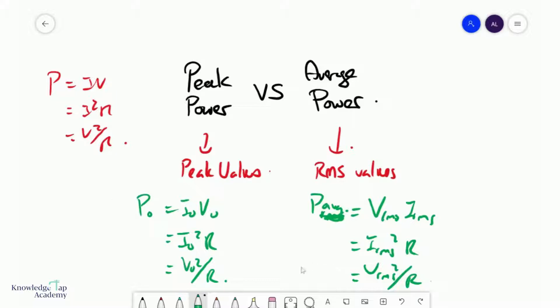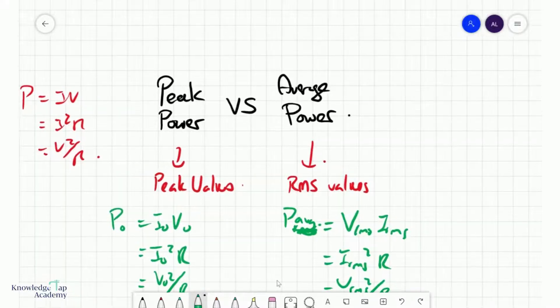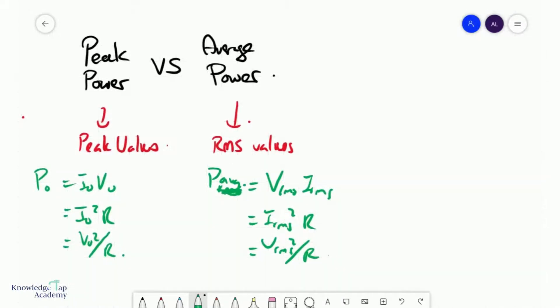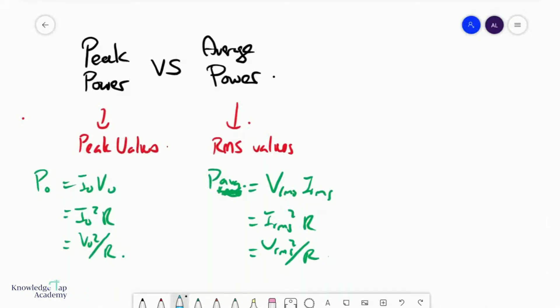With all of these in place, we can actually look at the most common type of alternating source, which is the sinusoidal one.